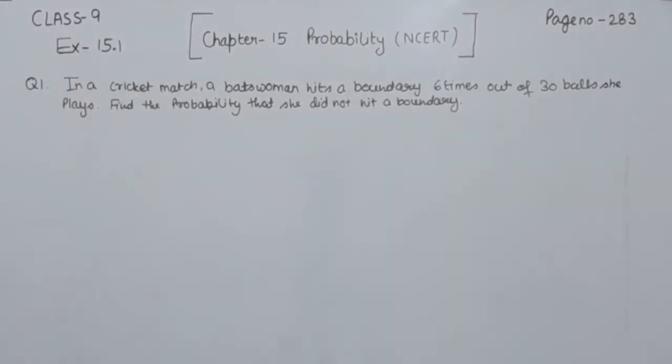In a cricket match, a batswoman hits a boundary 6 times out of 30 balls she played. Find the probability that she did not hit a boundary.